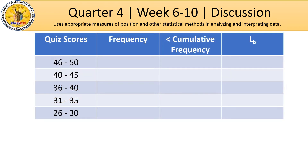For us to answer the questions easily, we have to consider this table. We have to complete it. Since we are given the set of data, we have to count the frequency, which is given in our activity sheet. We can also see quiz scores already grouped — from 46 to 50, from 40 to 45, and so on. From the set of data we have, we can determine the frequency for each range: 26 to 30 has 3, 31 to 35 has 4, 36 to 40 has 6, 41 to 45 has 6, and 46 to 50 has 1.